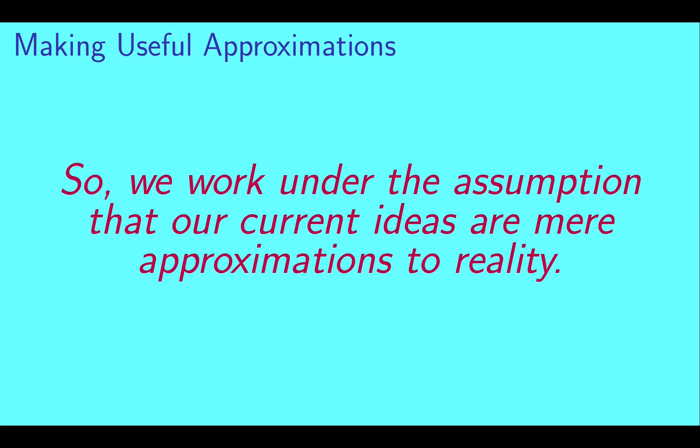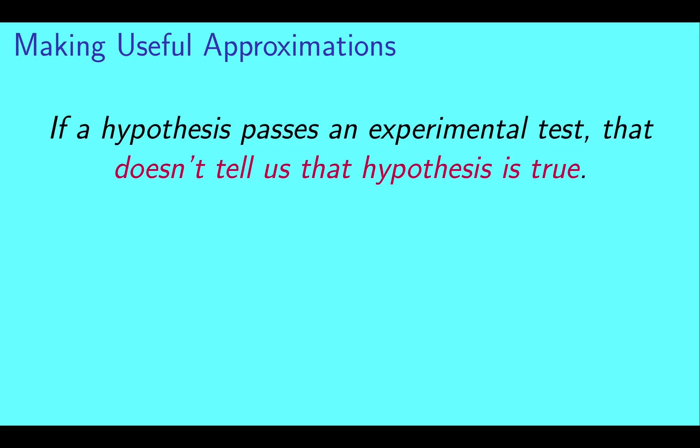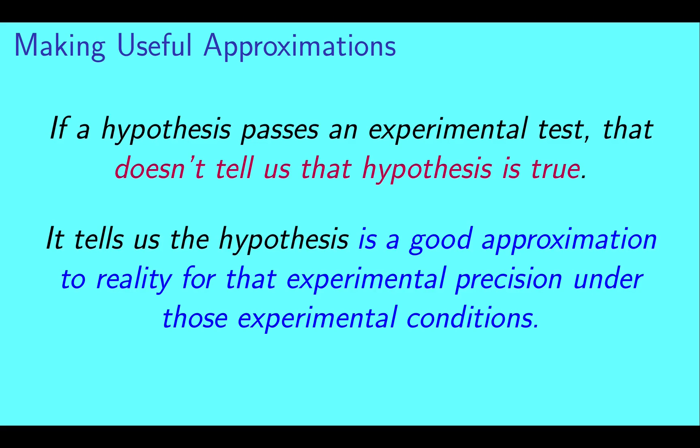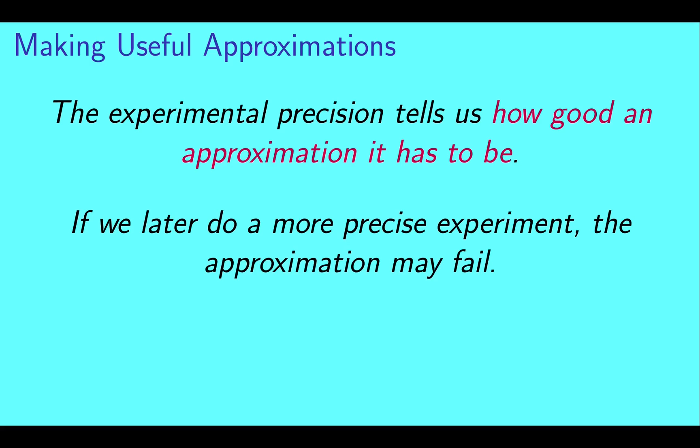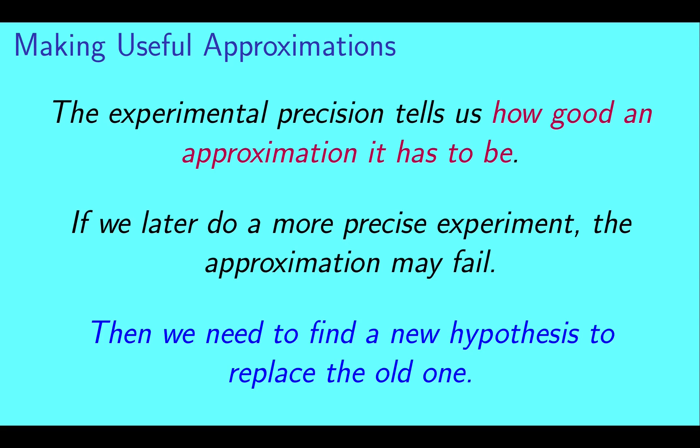So we work under the basic assumption that our current ideas are mere approximations to reality. If a hypothesis passes an experimental test, that doesn't tell us that hypothesis is true. It tells us that the hypothesis is a good approximation to reality for that experimental precision under those experimental conditions. The experimental precision tells us just how good an approximation it has to be. If we later do a more precise experiment, that approximation may well fail.